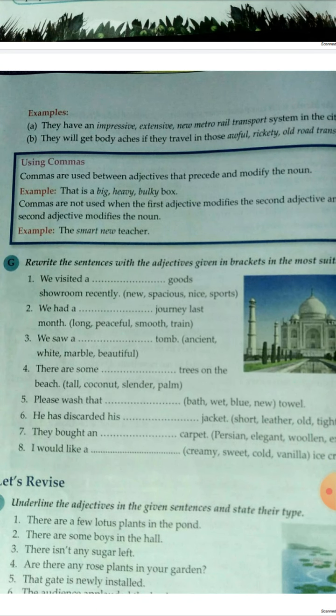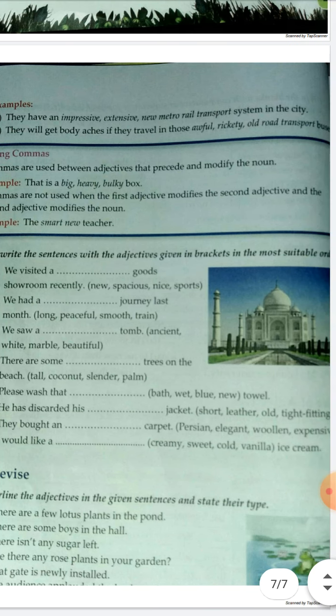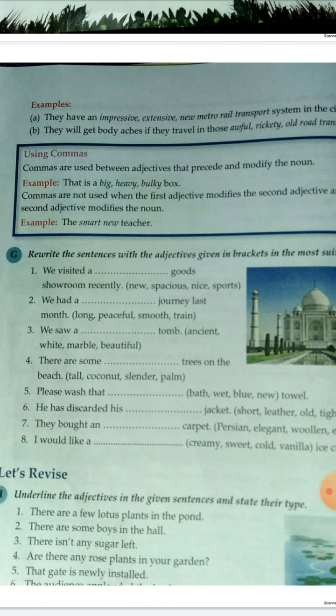Now, commas are used between adjectives that precede and modify the noun. For example: 'That is a big, heavy, bulky box.' There are three adjectives before 'box' — big, heavy, and bulky — and commas are used between them. However, commas are not used when the first adjective modifies the second adjective and the second adjective modifies the noun.